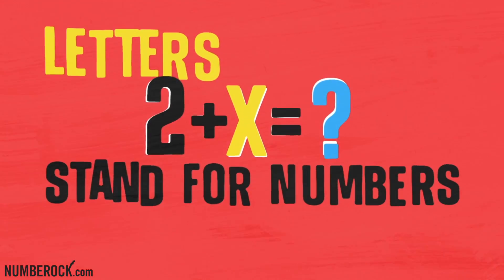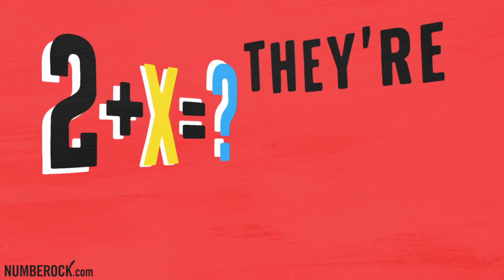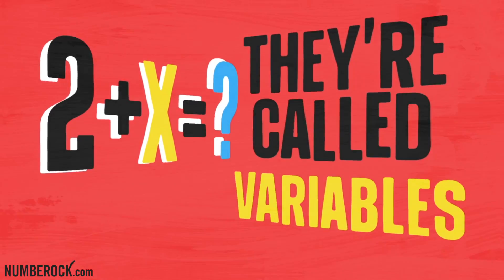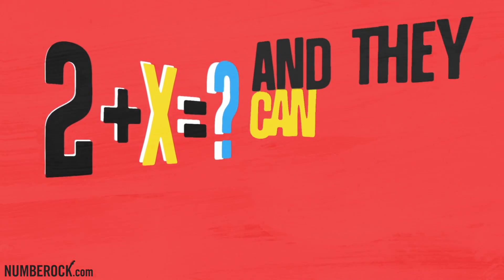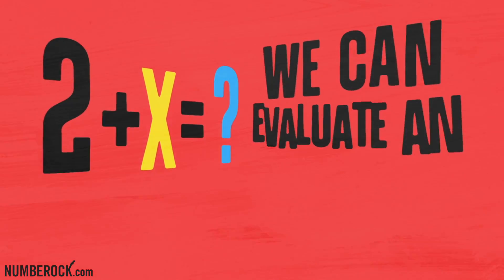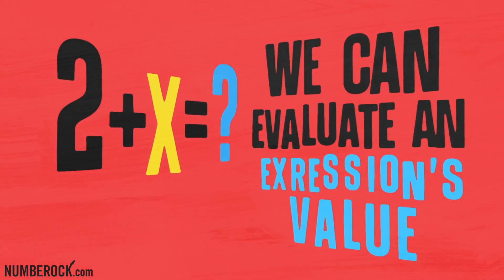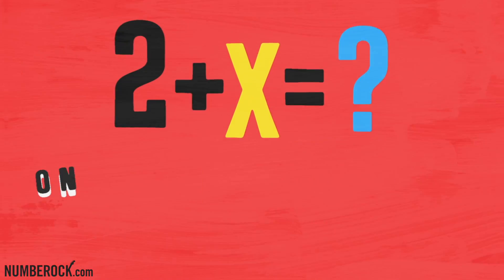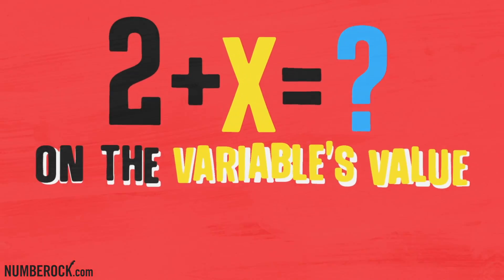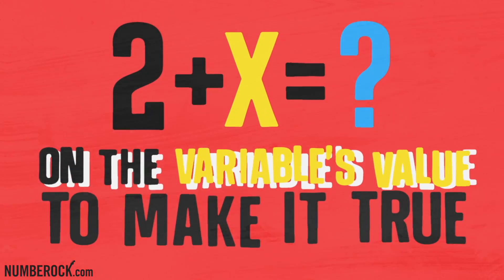Let us stand for numbers in algebra — they're called variables and they can change on ya. We can evaluate an expression's value; it depends on the variable's value to make it true.